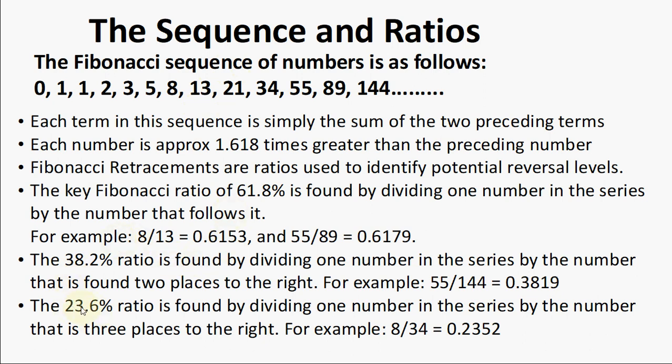How do we find the 23.6 ratio? It is found by dividing one number in the series by the number that is 3 places to the right. So 3 divided by 13 gives you 0.2352. 13 divided by 55 gives you the same thing. 8 divided by 34 — just take the number 3 places to the right and divide, you will get 0.2352. For some reasons, however, this ratio seems to play an important role in the financial market, just as they do in nature, and can be used to determine critical points that cause an asset to reverse.